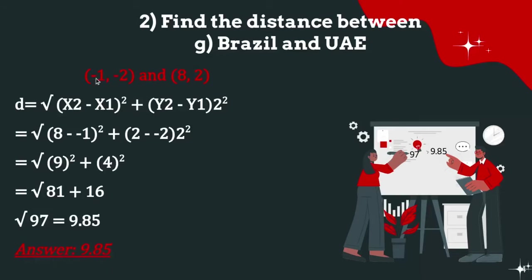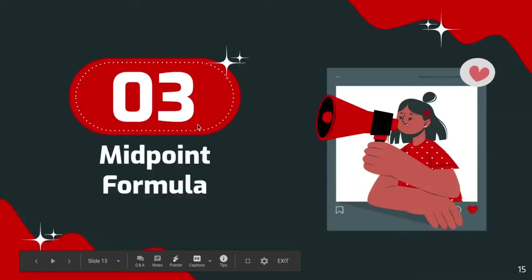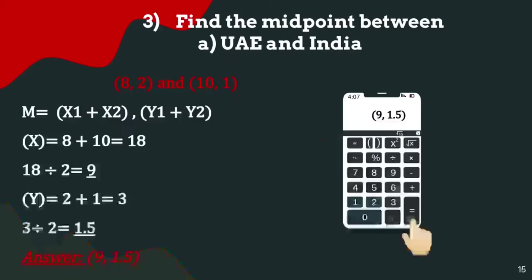Find the distance between Brazil (-1, -2) and UAE (8, 2). Using the distance formula, replacing the numbers: √((8 - (-1))² + (2 - (-2))²) = √(9² + 4²) = √(81 + 16) = √97. Using a calculator, we get 9.85. Task 3 is the midpoint formula.